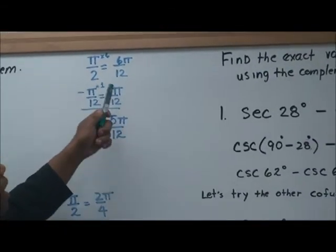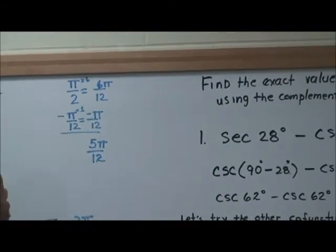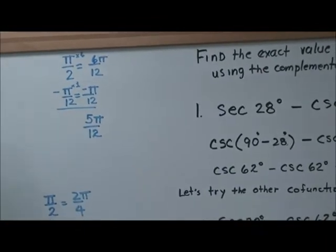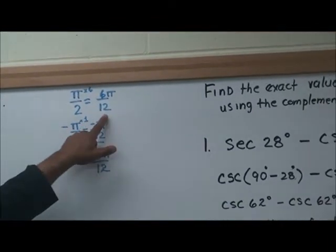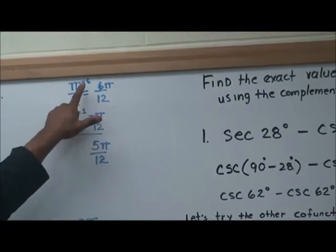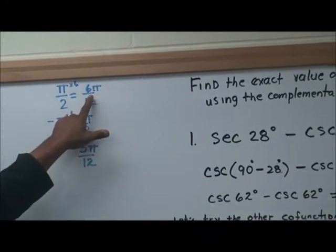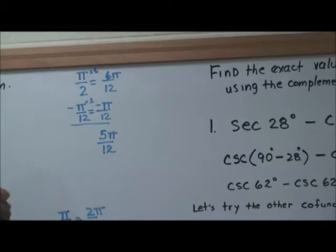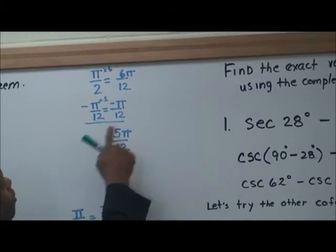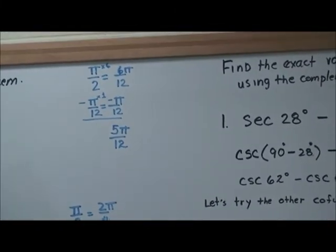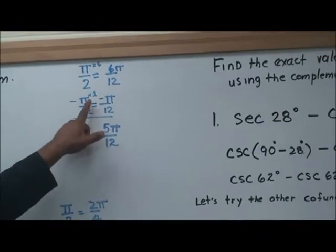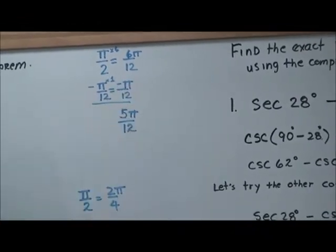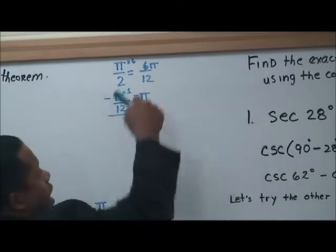You got π/2 minus π/12. Again, we want to find the common denominator here. Our common denominator will be 12, right? So 2 into 12 goes 6 times, and 6 times π will be 6π. So you rename the fraction. 12 goes into 12 one time, and 1 times negative π is negative π. So here we rename the fractions.